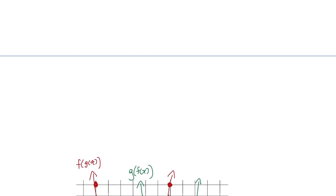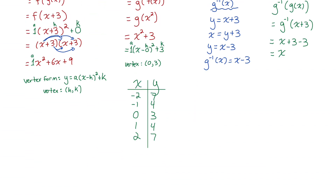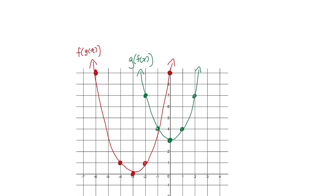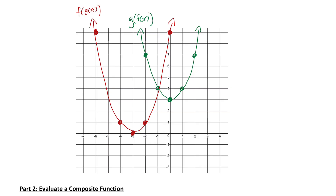Lastly, we had the inverse of g at g of x, which simplified nicely to just y equals x — a linear function with a slope of 1 and a y-intercept of 0. I can graph that quite easily by plotting the y-intercept at 0, then with a slope of 1 going up 1, right 1 to plot another point. And that was the inverse of g at g of x.